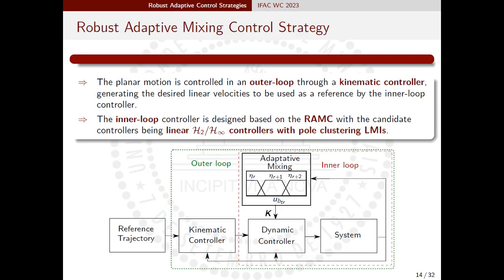The flight control strategy is composed of an outer-loop kinematic controller performing the planar motion control and the inner-loop controller for the altitude and attitude motions, besides the UAV longitudinal and lateral velocities. The RAMC proposed in this work consists of two main components: the candidate controllers and the mixing scheme. The candidate controllers are the linear H2/H-infinity controllers with pole clustering LMIs. For the sake of comparison analysis, the proposed RAMC is compared with the one from our previous work. These RAMCs differ by the way the candidate controllers are designed.